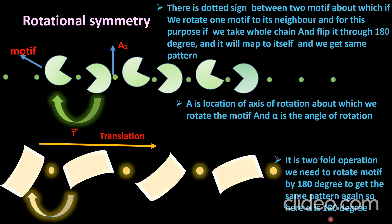The rotational symmetry operation is applied two times: we rotate 90 degrees once, then 90 degrees again, and we get the same symmetry. That is why it is called a two-fold symmetry operation.